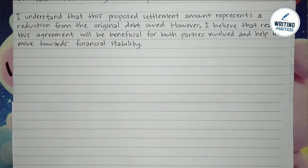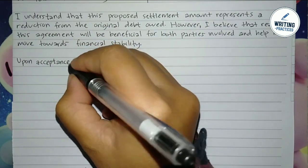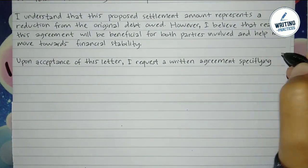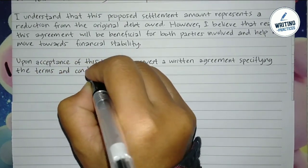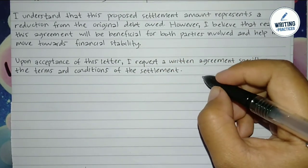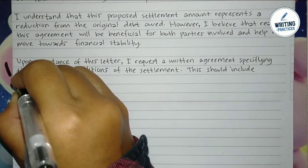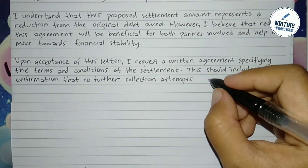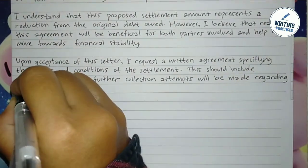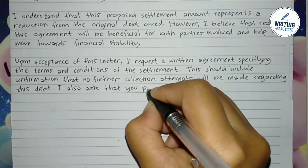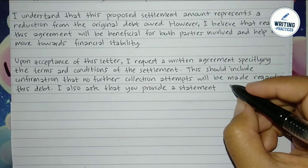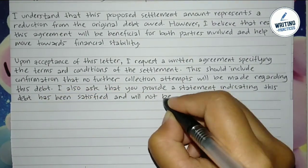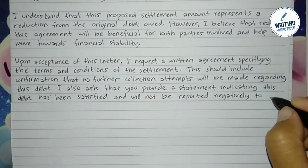In the fifth paragraph, you can talk about conditions. You must request a written agreement with settlement terms — for example: 'Upon acceptance of this offer, I request a written agreement specifying the terms and conditions of the settlement.' You may also request a positive rating from the agency and confirmation that no further collection attempts will be made. Here is the example: 'The agreement should include confirmation that no further collection attempts will be made regarding this debt. I also ask that you provide a statement indicating the debt has been satisfied and will not be reported negatively to any credit bureaus.' A positive credit rating from the agency will help you borrow money elsewhere.